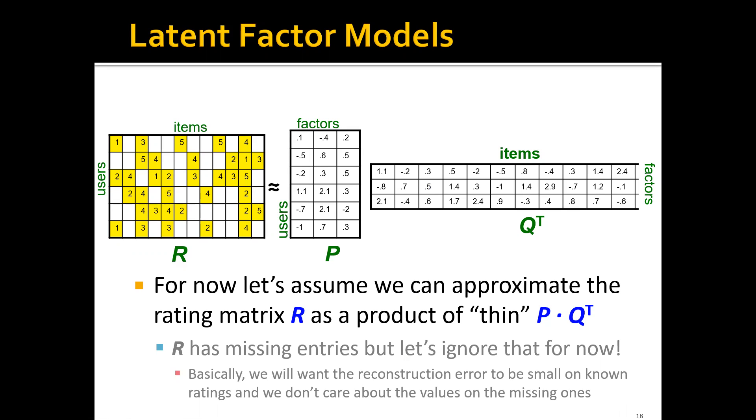If we do this, then we already know how to perform this latent factor analysis. The answer is SVD. Remember, in SVD, we actually factorize the input matrix into three matrices. If we have the results of SVD, then we can simply set the user matrix P to the product of U and sigma, and we can set Q to V. In this case, we already finished learning the latent factor models.